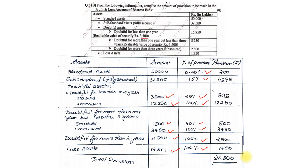These were the two sums pending from the April 2023 question paper. I hope everyone has understood how to solve both. For the provision percentages, you just have to remember the table with all the provision percentages, which has already been covered in a separate video. After that, you simply apply, multiply, and get the answer. With that, we end this video — thank you.